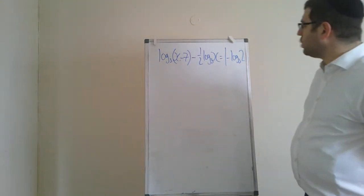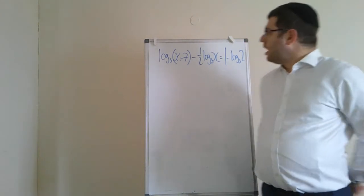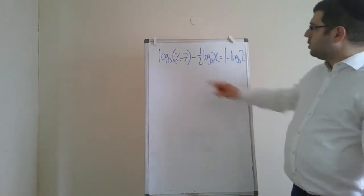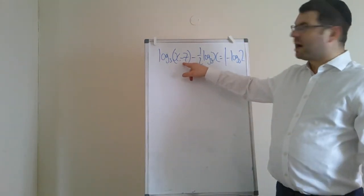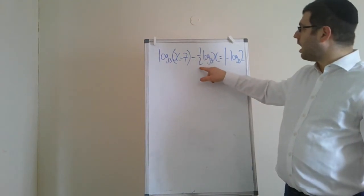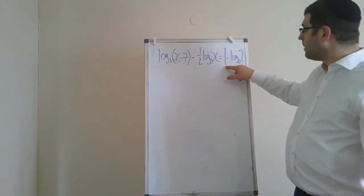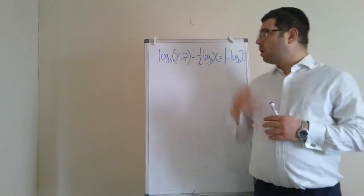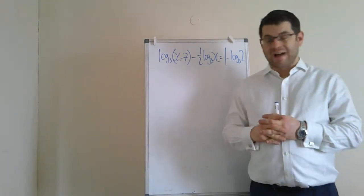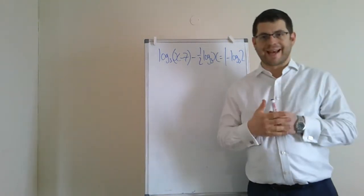So, a trickier looking logarithmic equation. I'd like to write this down. Log 3 of x minus 7, minus a half log 3 x, is 1 minus log 3 of 2. Copy this down. Pause the video and have a go. Let's see how you get on.